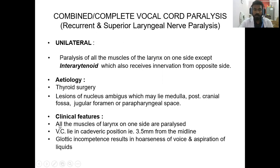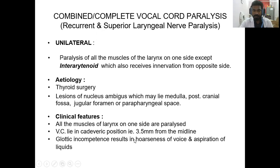Clinical features: all the muscles of the larynx on one side are paralyzed except the interarytenoid muscle. The vocal cord lies in the cadaveric position — 3.5 mm from the midline. Glottic incompetence results in hoarseness of voice and aspiration of liquids. The patient will have repeated aspiration and a hoarse voice.